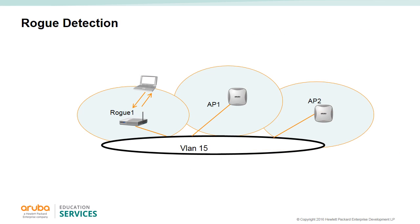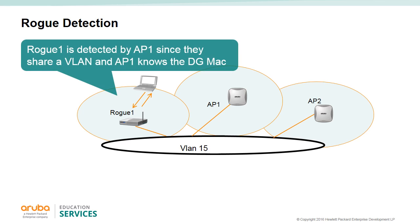An AP is considered to be a rogue AP if it is both unauthorized and plugged into the wired side of the network. For the IPS to see the rogue, it must be in the same VLAN as the IPS. The IPS collects MAC addresses from the wired side and compares them with what it sees on the wireless side. In the example, AP1 can see the rogue AP both wirelessly and wired.